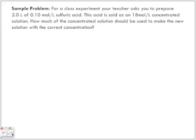Let's look at our first sample problem. For a class experiment, your teacher asks you to prepare 2.0 liters of 0.10 moles per liter sulfuric acid. This acid is sold as an 18 moles per liter concentrated solution. How much of the concentrated solution should be used to make the new solution with the correct concentration?